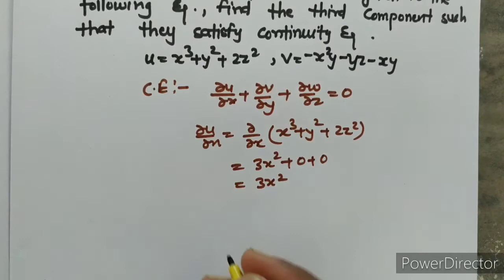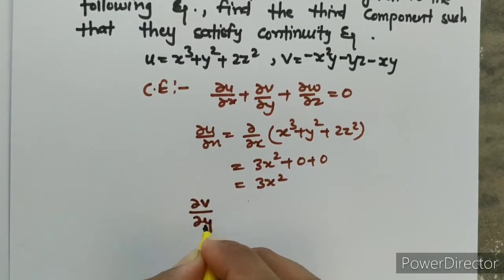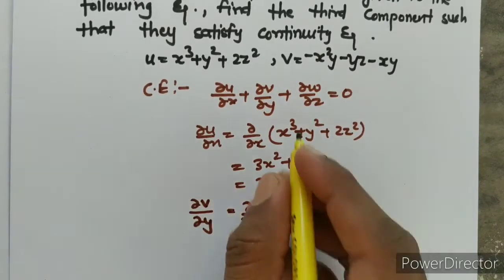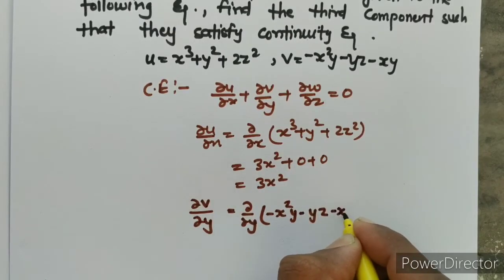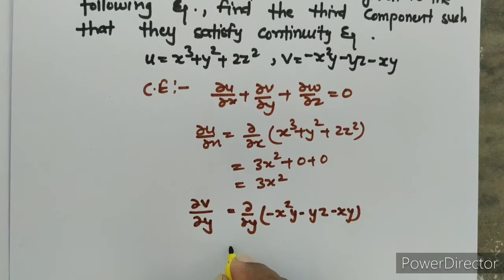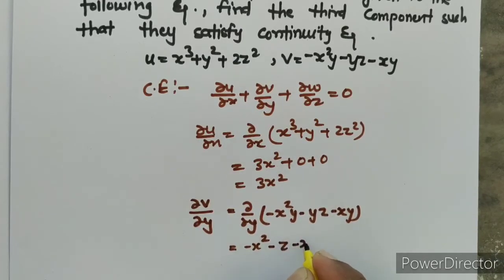Now let's talk about v. Del v upon del y — v's value is minus x squared y minus yz minus xy. We differentiate with respect to y, so del v upon del y equals minus x squared minus z minus x.